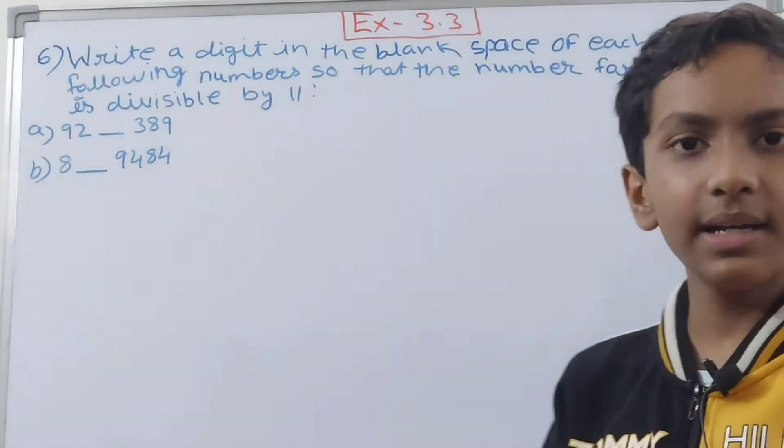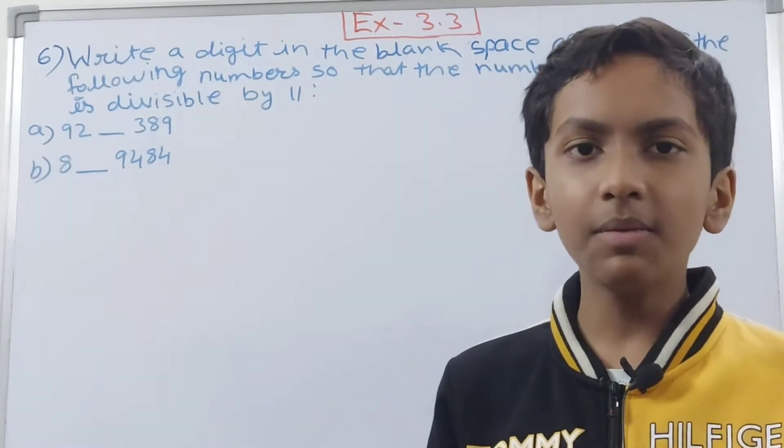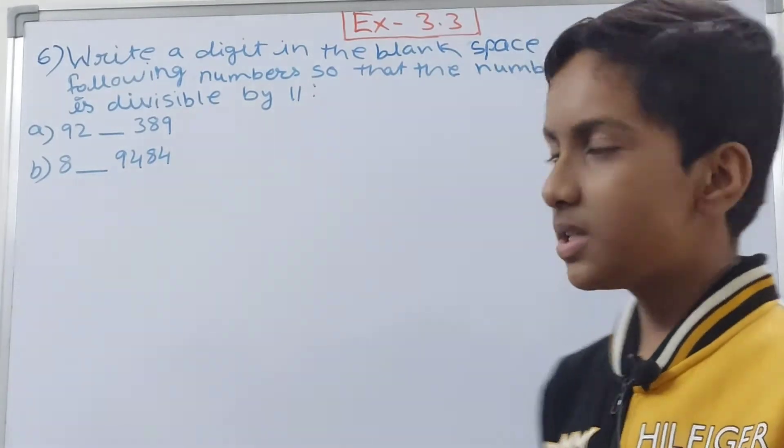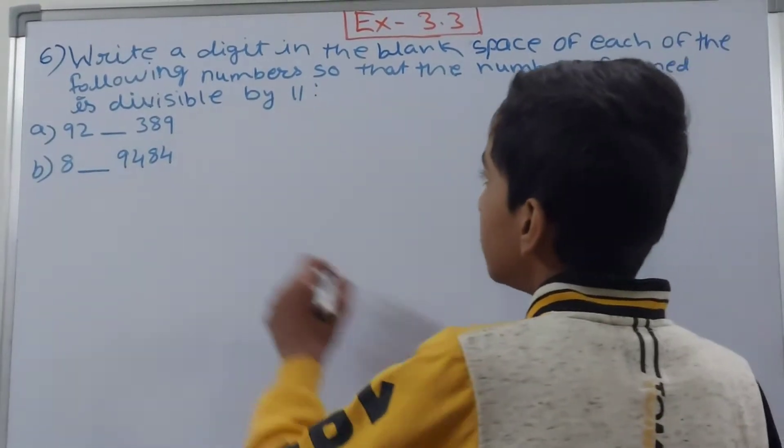First, divisibility rule of 11 says that you add the digits at odd and even places, find the difference, and if the difference is 0 or multiple of 11 then the number is divisible by 11. So let us start by doing that.